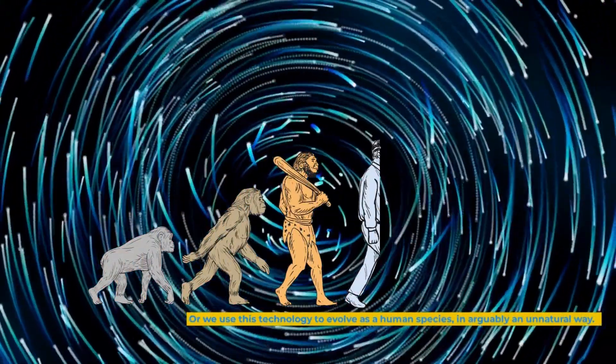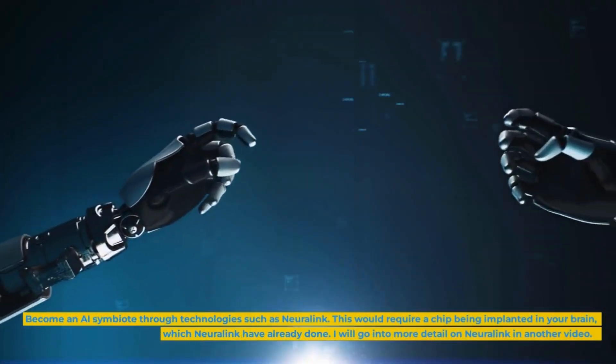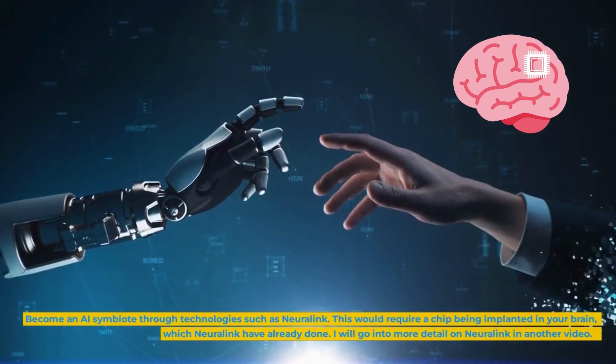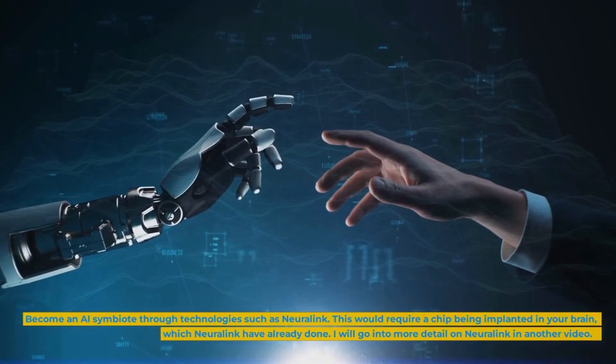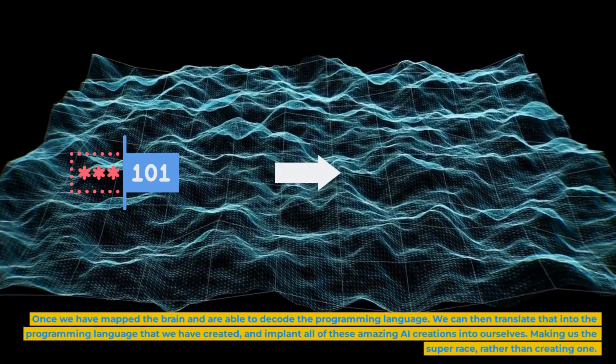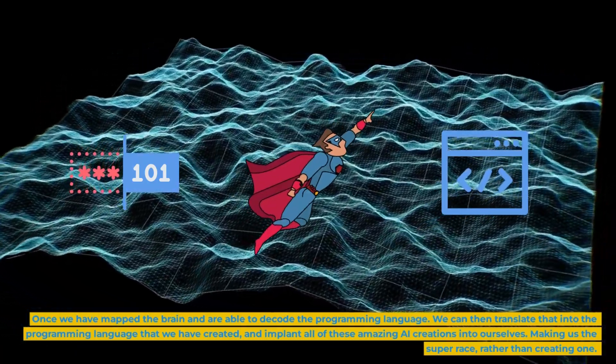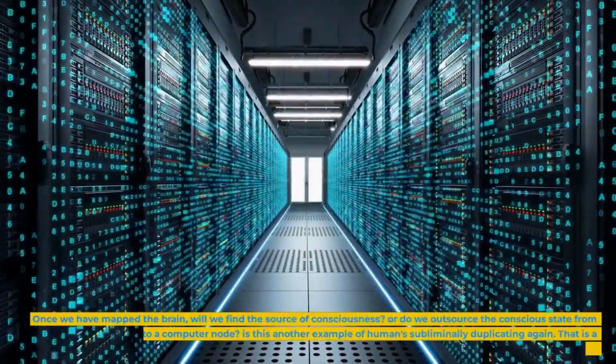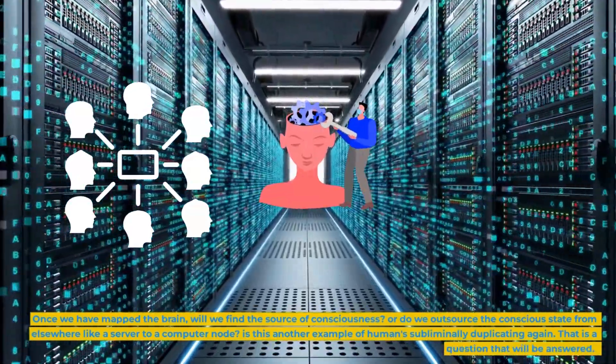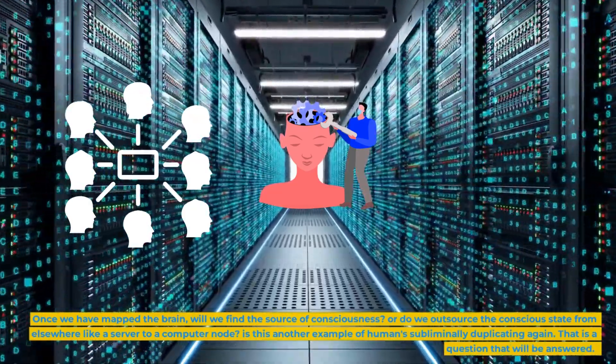Or we use this technology to evolve as a human species, in arguably an unnatural way. Become an AI symbiote through technologies such as Neuralink. This would require a chip being implanted in your brain, which Neuralink have already done. I will go into more detail on Neuralink in another video. Once we have mapped the brain and are able to decode the programming language, we can then translate that into the programming language that we have created and implant all of these amazing AI creations into ourselves. Making us the super race rather than creating one. Once we have mapped the brain, will we find the source of consciousness? Or do we outsource the conscious state from elsewhere like a server to a computer node? Is this another example of humans subliminally duplicating again? That is a question that will be answered.